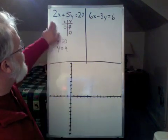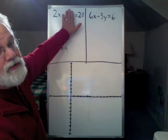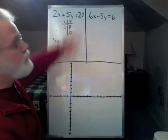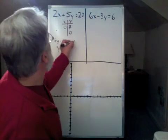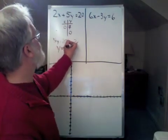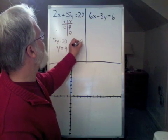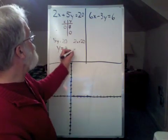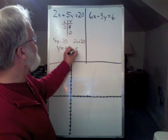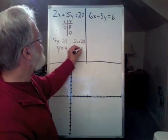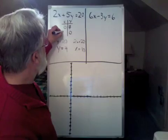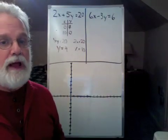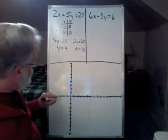Now, if I say that y equals zero, that means 5 times y is zero. That means I have 2x equals 20. And of course, when we say 2x equals 20, we divide both sides by 2. We get the result that x equals 10. So now I have 2 coordinate pairs that I can plot: 0, 4 and 10, 0. So I'm going to plot them.